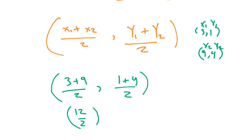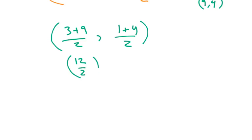So 9 plus 3 is 12, and so we have 12 over 2, and 1 plus 4 is 5, so 5 over 2. And so this becomes 6, comma, 5 over 2. 12 divided by 2 is 6, and the other point is 5 over 2.